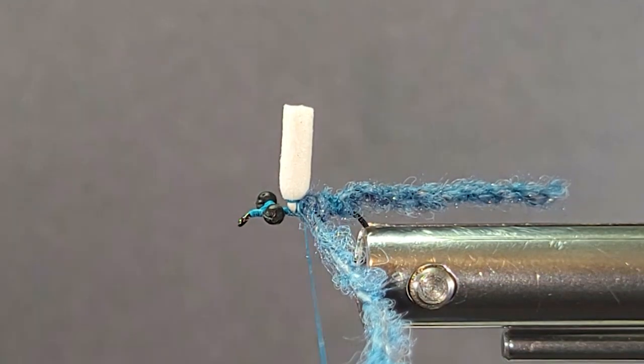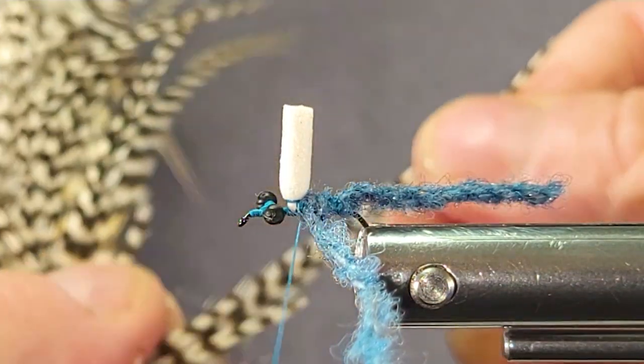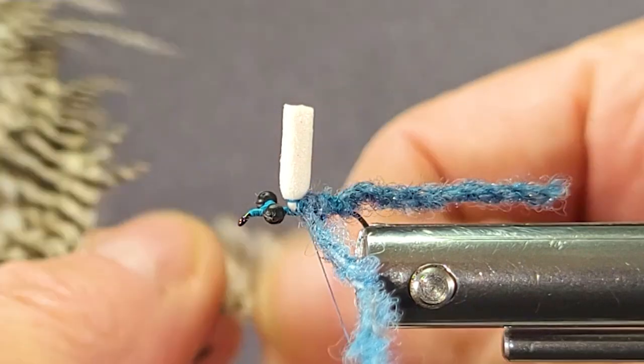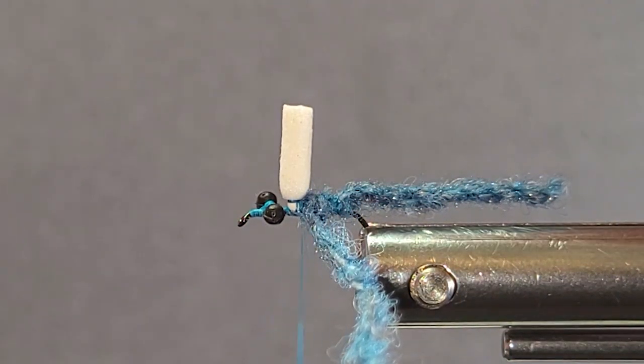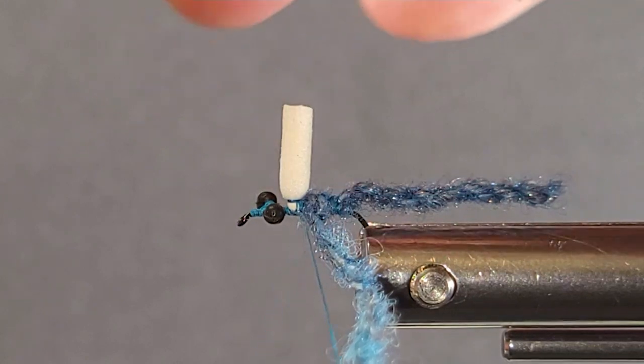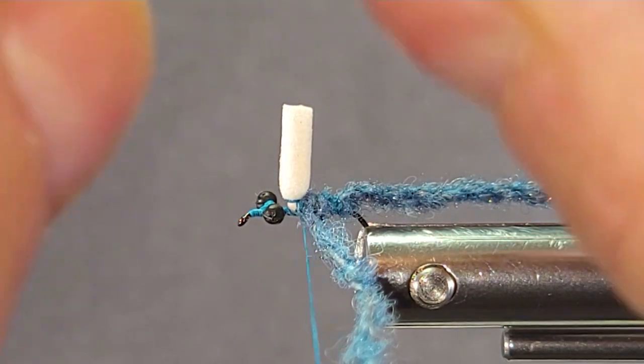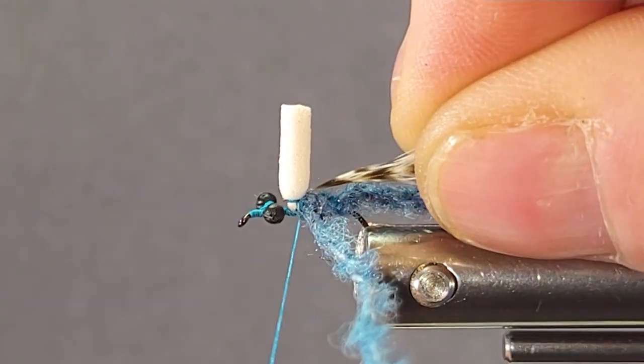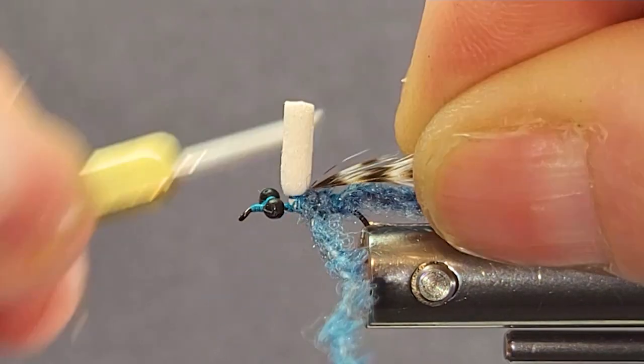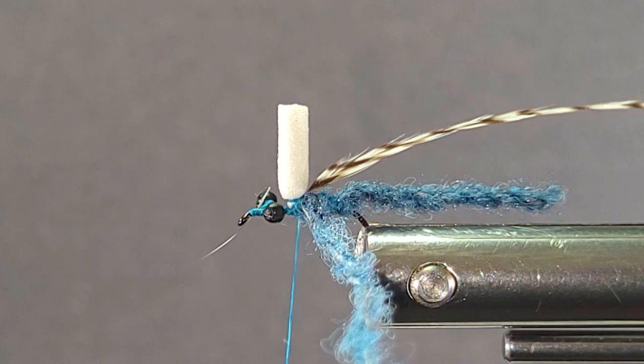Now I'll bring in my hackle. I'm going to cut it off here, but a little bit webby. That's okay. It's not really going to carry the fly as much as the foam. The floating yarn is going to keep this fly up. So now I have my hackle tied in there.